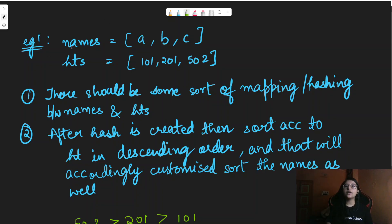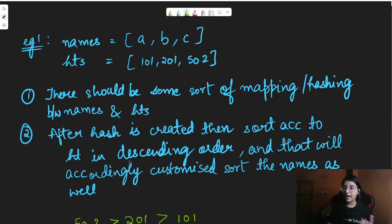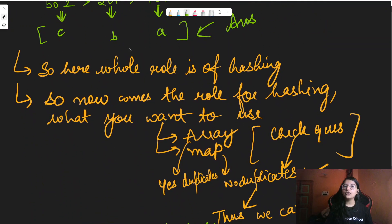There should be some sort of mapping or hashing between names and heights. Only then, when we sort in descending order, can we return the correct corresponding name. After the hash is created, we sort by height in descending order, and the name sorting follows accordingly. The main role here is only for the hashing.